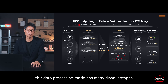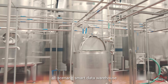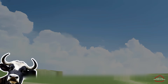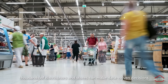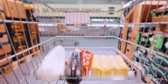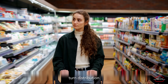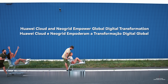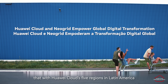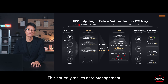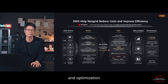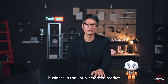Huawei Cloud provides a next-generation all-scenario smart data warehouse, DWS, to support Neogrid in analyzing and storing supply chain data in real-time. With DWS, thousands of distributors and stores can make data-driven decisions to optimize their supply chain, turn distribution challenges into revenue opportunities, and grow their business. With Huawei Cloud's five regions in Latin America, Neogrid has implemented one-stop management and deployment operations, greatly simplifying the entire process. This not only makes data management more convenient and efficient, but also lays a solid foundation for their future business expansion, helping Neogrid to further develop their business in the Latin American market.